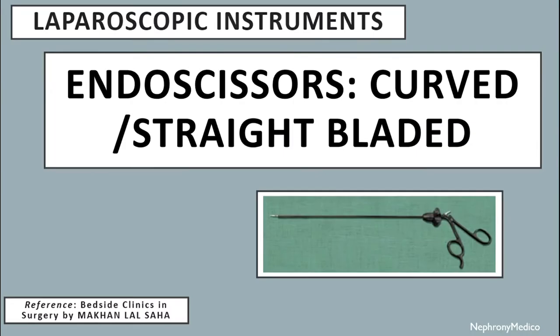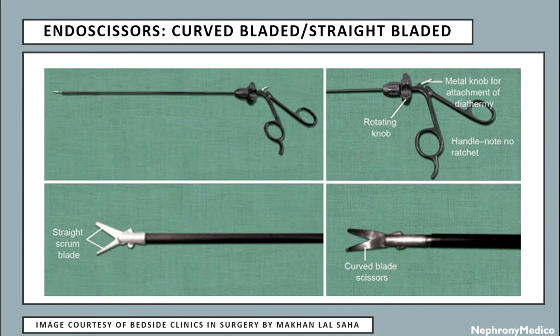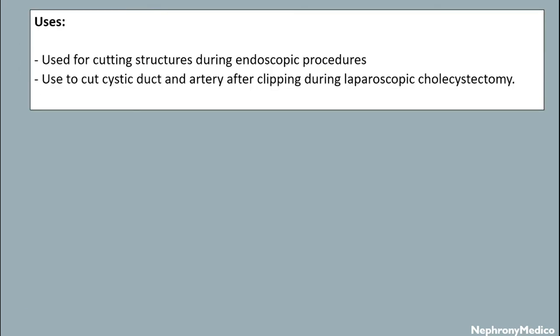Let's talk about endoscissors, which may be curved or straight-bladed. This is a picture showing endoscissors — curved-bladed or straight-bladed. Uses: they are used for cutting structures during endoscopic procedures and to cut the cystic duct and artery after clipping during laparoscopic cholecystectomy.